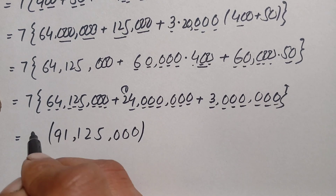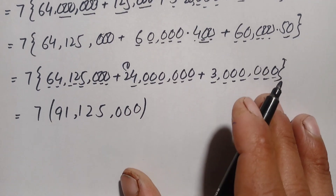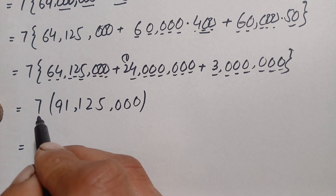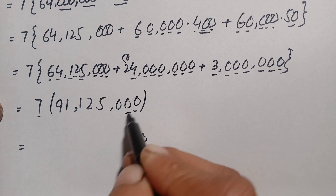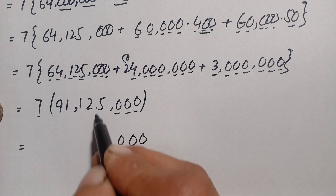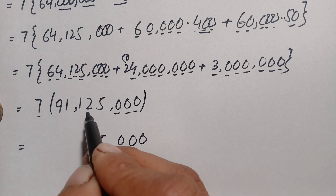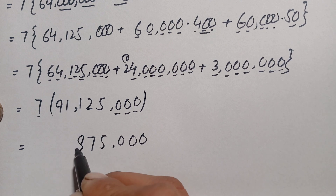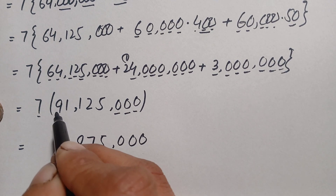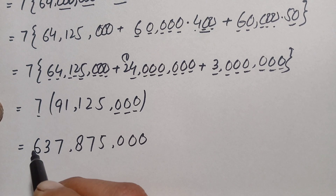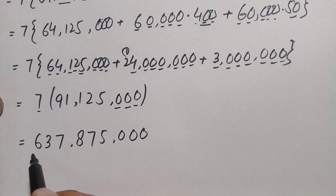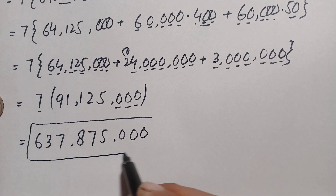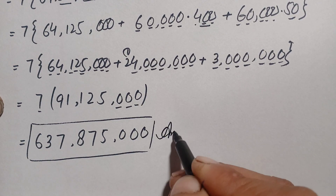Finally, we multiply 91,125,000 × 7. Starting from the ones: 7×0=0 (three zeros), 7×5=35 write 5 carry 3, 7×2=14+3=17 write 7 carry 1, 7×1=7+1=8, 7×1=7, 7×9=63. The product gives 637,875,000. So the final answer is 637,875,000.